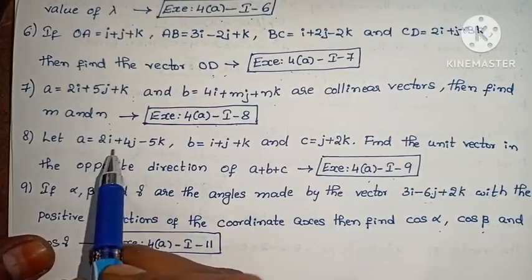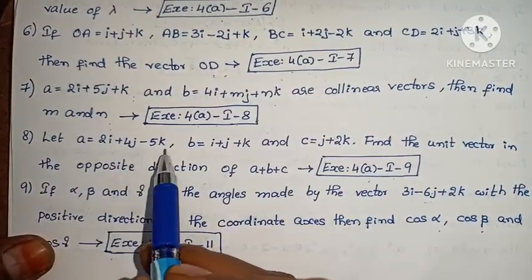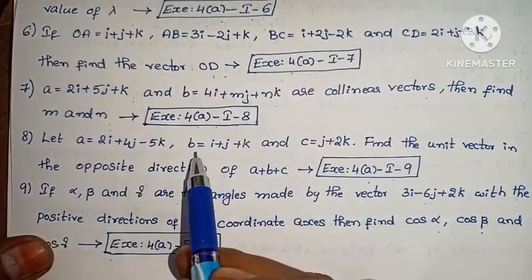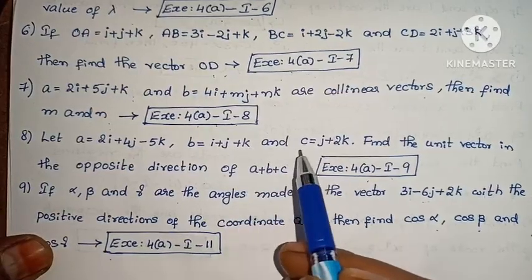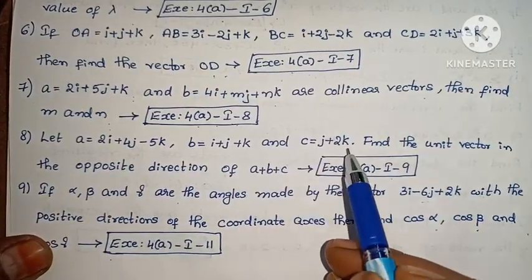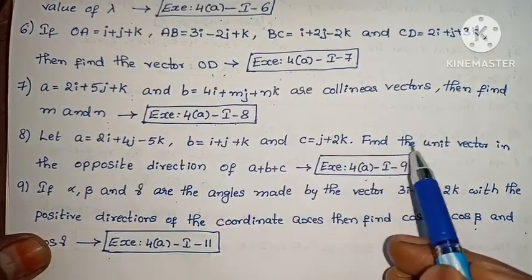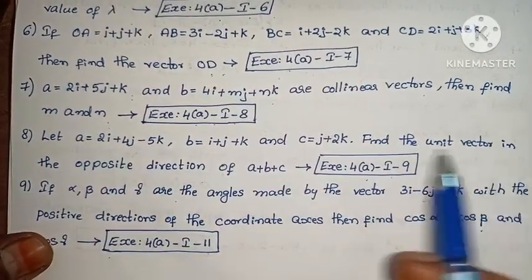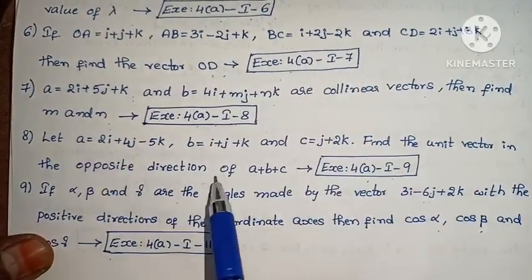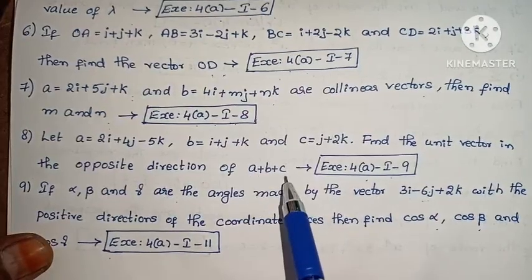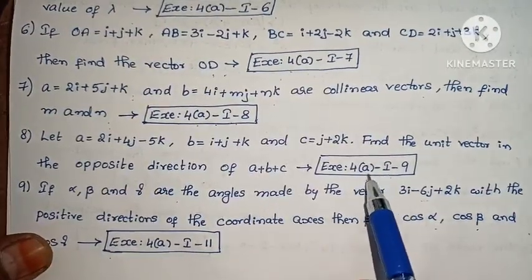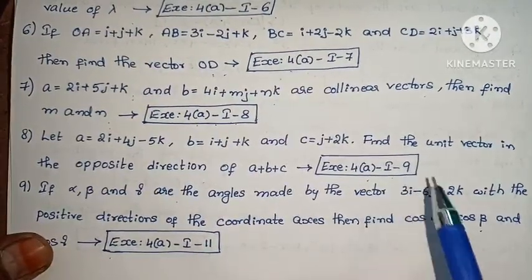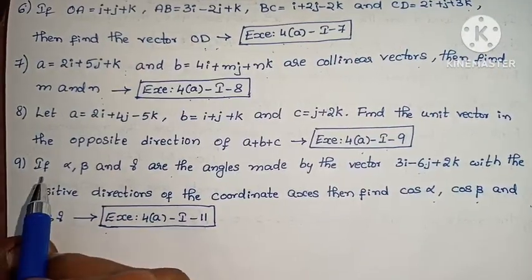Next: Let a equals to 2i + 4j minus 5k, b equals to i + j + k, and c equals to j + 2k. Find the unit vector in the opposite direction of a plus b plus c. Exercise 4A, problem 9.